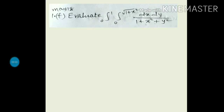Hello students. In this lecture we will continue with the problems to evaluate double integration when limits are given. In the previous lecture we solved some problems and discussed the procedure to solve such problems. See the question: find the double integration of 1/(1 + x² + y²) with respect to both variables x and y within the limits 0 to 1 and 0 to √(1 + x²). So what is the procedure to solve such problems?